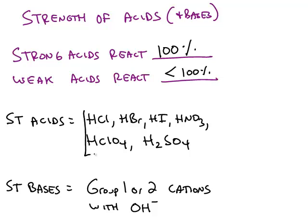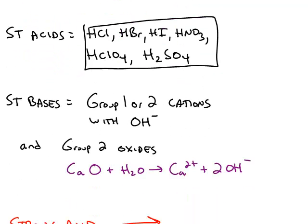These are the six common strong acids. So if a chemical is an acid and it's not on this list, then it must be a weak acid. Strong bases are group 1 or group 2 cations paired up with hydroxides.